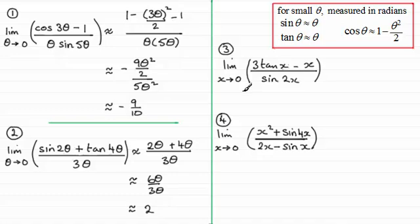And for number three we've got the limit as x tends to zero now for three tan x minus x all over sine two x. So for this one tan x here is going to approximate to x, so we're just going to have three x there minus the x and then that's divided by the approximation for sine two x will be two x. So what we've got here is two x divided by two x which is going to be one.